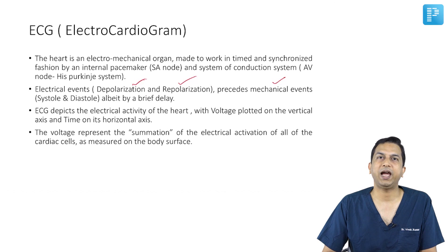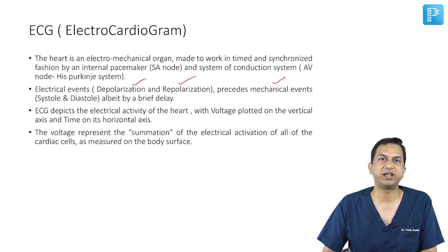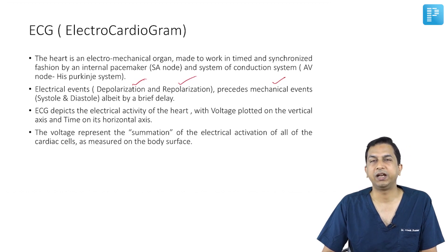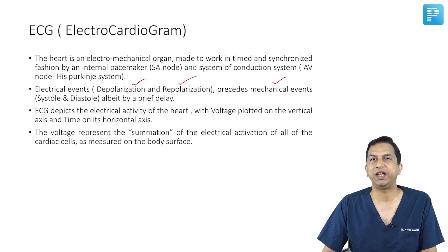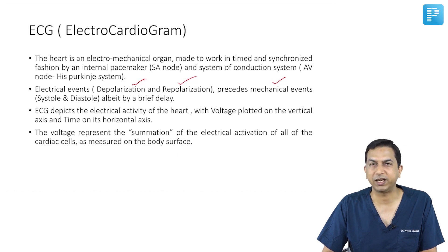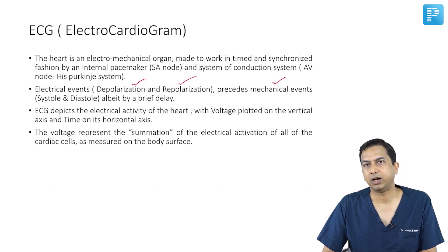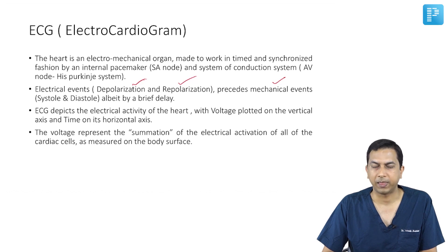The electrical activity in the atria cannot directly go to the ventricle, and the activity in the ventricle cannot directly go to the atria. For this communication to happen, there is a connection in the form of the AV node, His bundle, and specifically the penetrating part of the His bundle, which transmits electrical activity to and from the chambers.